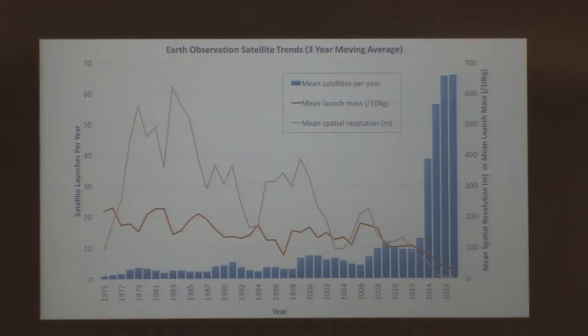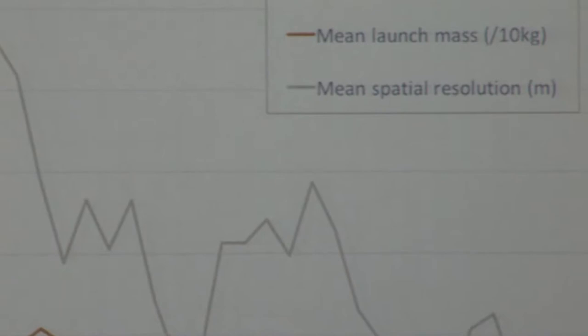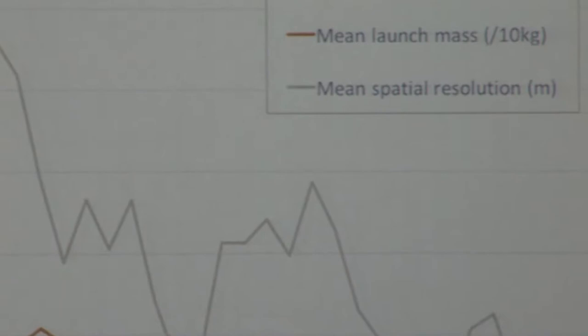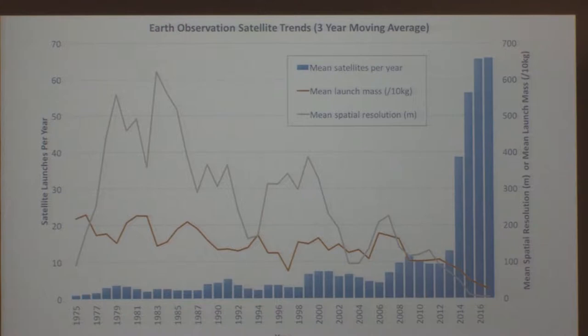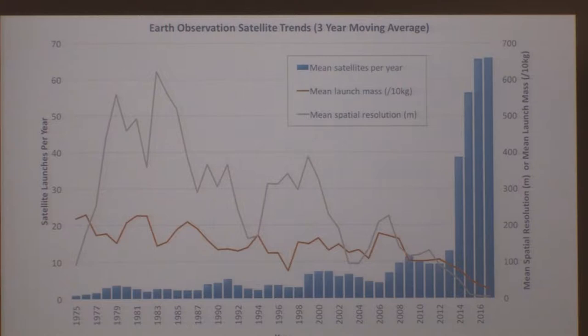This is what things look like in aggregate — a smoothed look at the growth in Earth observation sensors over time. The blue bars show the average number of Earth observation satellites launched per year — you can see an explosion in recent launches. The average spatial resolution for sensors carrying a multispectral camera has declined dramatically, now on average below five meters per pixel. The mass of those spacecraft has also declined, meaning it's easier to get assets into space at the same cost per pound.